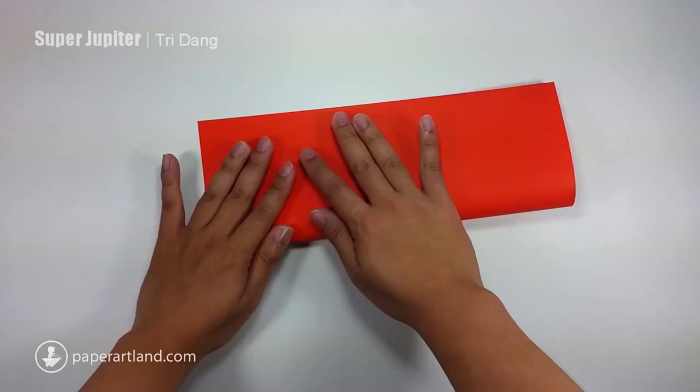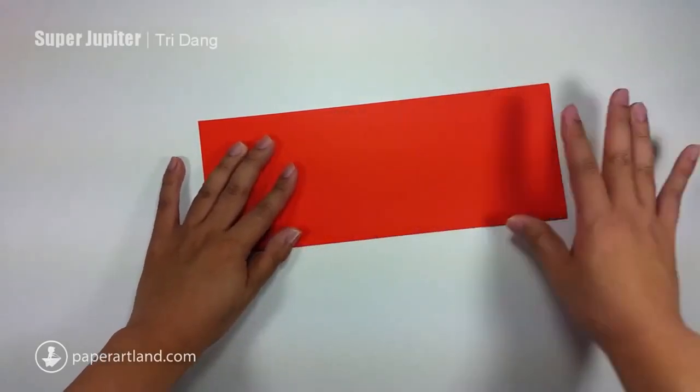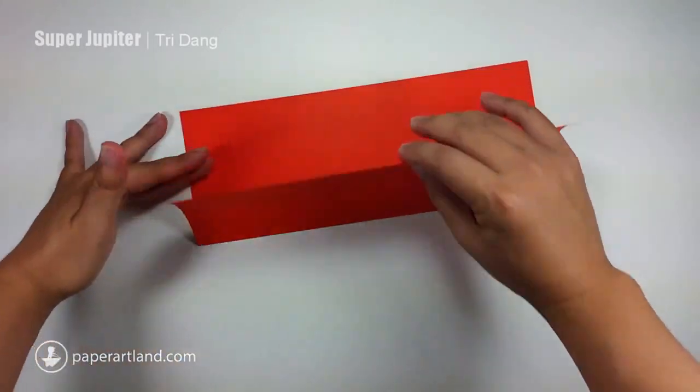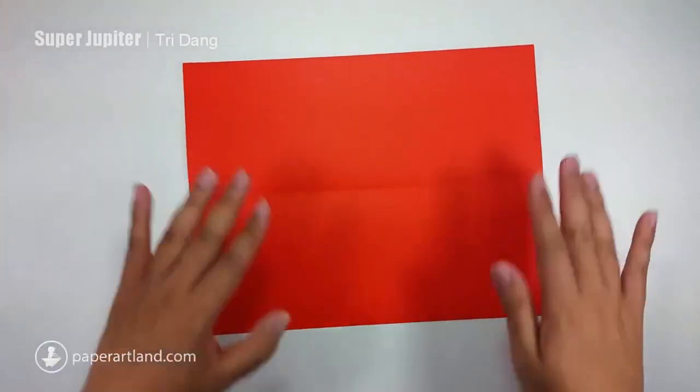So, first step, I fold the paper in half horizontally. Make a crease. Next, unfold the paper.